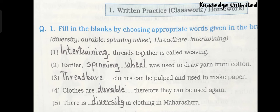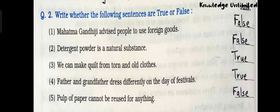Let's see question number one: fill in the blanks by choosing appropriate words given in the brackets. First one: dash trades together is called weaving — answer is intertwining. Second one: earlier dash was used to draw yarn from cotton — answer is spinning wheel. Third one: dash clothes can be pulped and used to make paper — answer is threadbare. Fourth one: clothes are dash therefore they can be used again — answer is durable. Fifth one: there is dash in clothing in Maharashtra — answer is diversity.